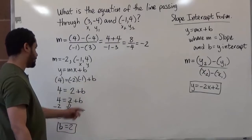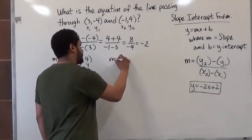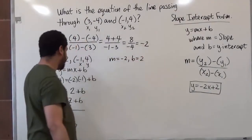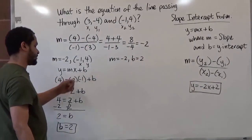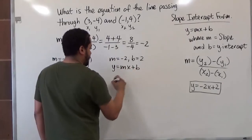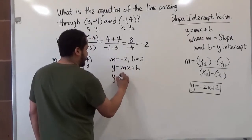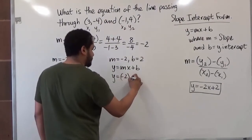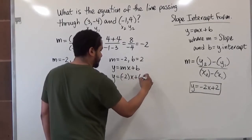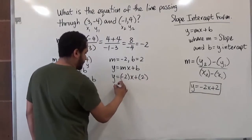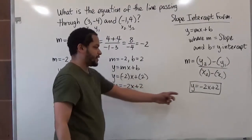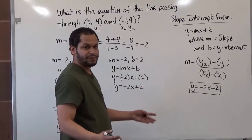Now we'll do the same thing: write the slope negative 2, the b value which is positive 2, and generate the equation of the line using y equals mx plus b. Negative 2 substitutes for m and the b value substitutes as 2. We generate the same equation: y equals negative 2x plus 2. So our equation is the same for both points.